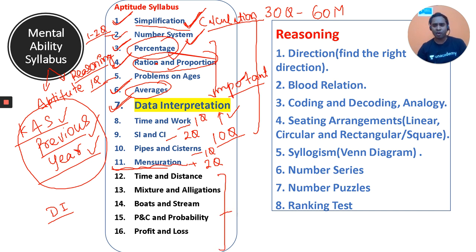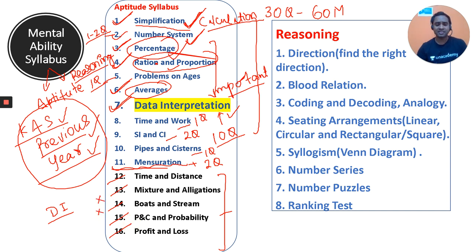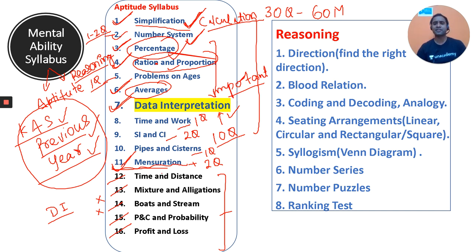Topics that are not very important for the KPSC exam include time and distance, mixture and allegation, boats and streams, permutation and combination, probability, and profit and loss. You can leave these. Focus deeply on topics up to number 11 in the list; the others are not very much required.